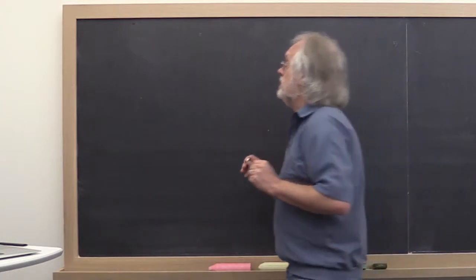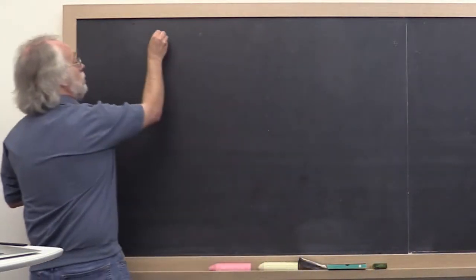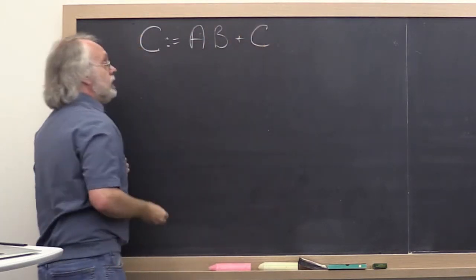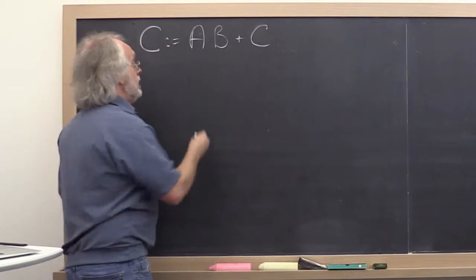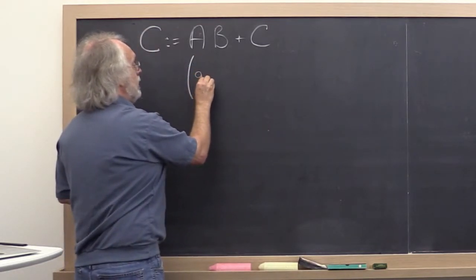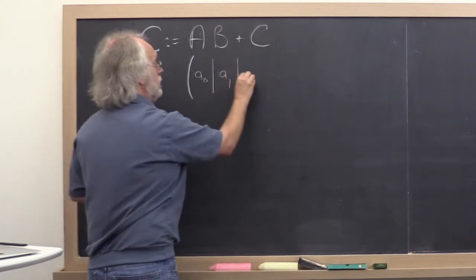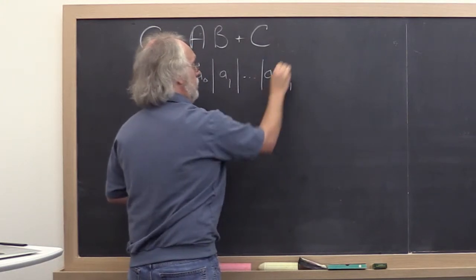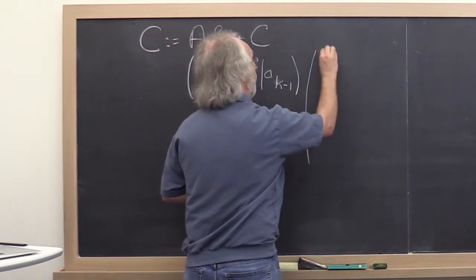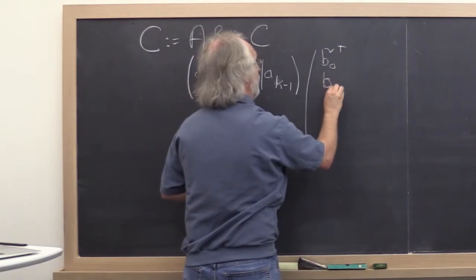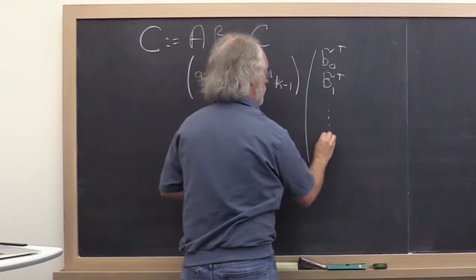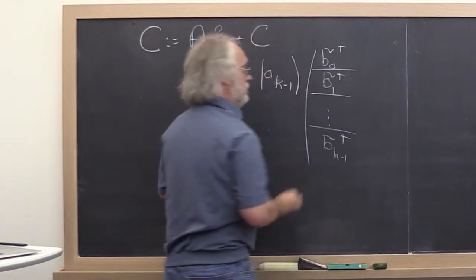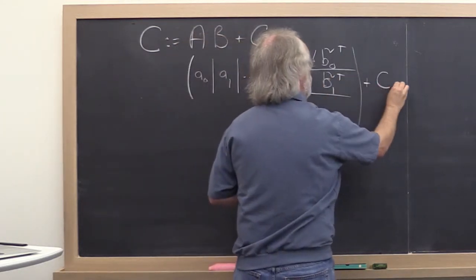What's the big idea here? The idea is if you're computing C becomes A times B plus C, then yet another way in which you can slice and dice the problem is to take matrix A and partition it by columns and B by rows, adding to C without partitioning C.